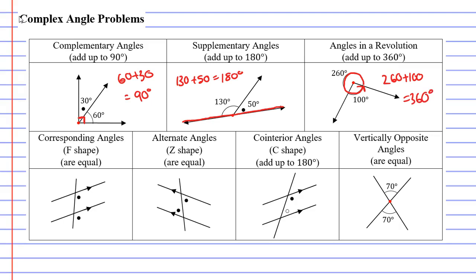At the bottom right we have something called vertically opposite angles. This occurs when two lines intersect at a point, and you will notice that angles that are opposite each other will be the same.